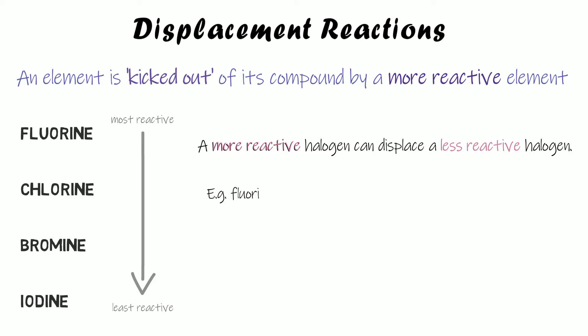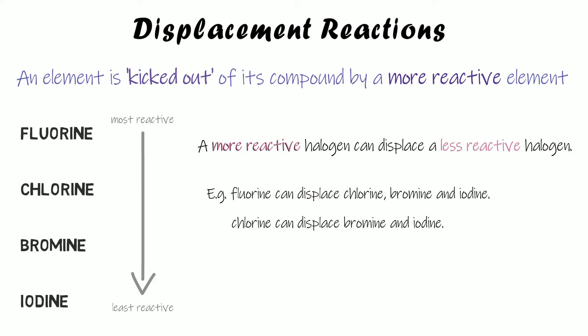So fluorine would be able to displace chlorine, bromine or iodine from a compound because it's more reactive than them. Chlorine could displace bromine or iodine because it's more reactive than them, but it wouldn't be able to displace fluorine. Bromine would only be able to displace iodine, not the others because it's less reactive than them. And iodine can't displace any of them because it's the least reactive.